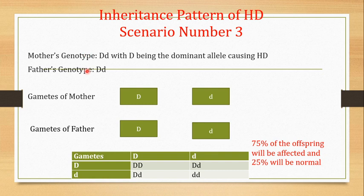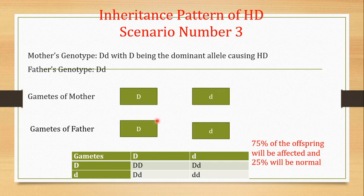Scenario number three: both the mother and the father are heterozygous — each has one copy of the diseased allele and one copy of the normal allele. The gametes of the mother will be 50% capital D and 50% small d. Similarly, the gametes of the father will be 50% capital D and 50% small d.